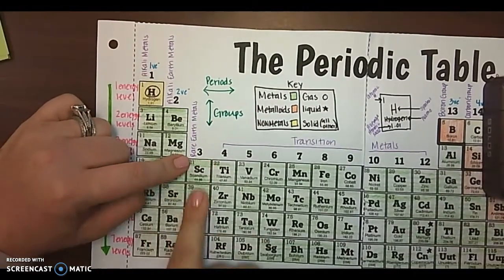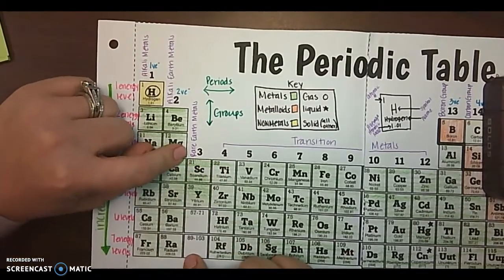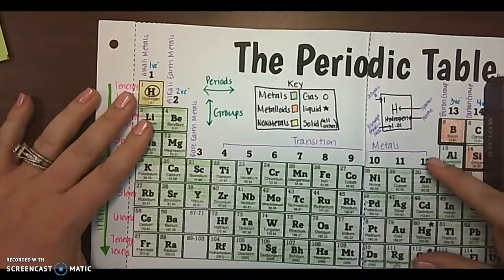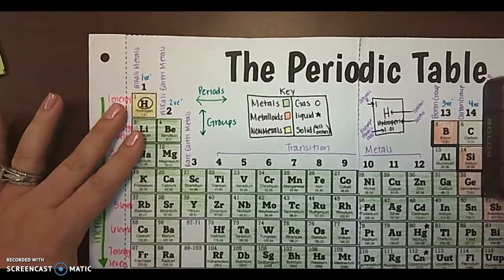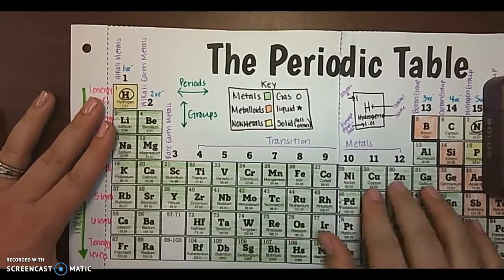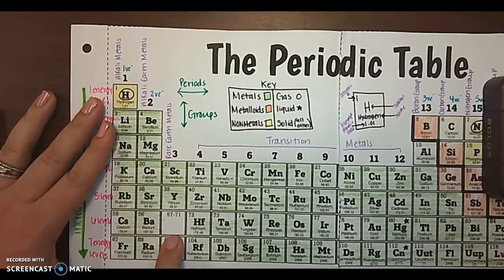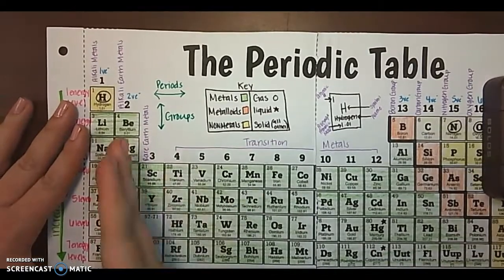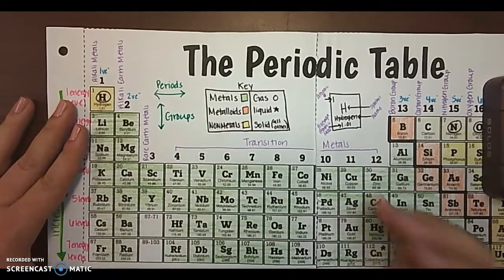Group over here. This group is called the rare earth metals. Now, all of these transition metals, they're really weird. So we're not going to discuss their valence electrons in this class. So you don't need to know those, but you need to know that this group is called the rare earth metals. And then all of these are transition metals.